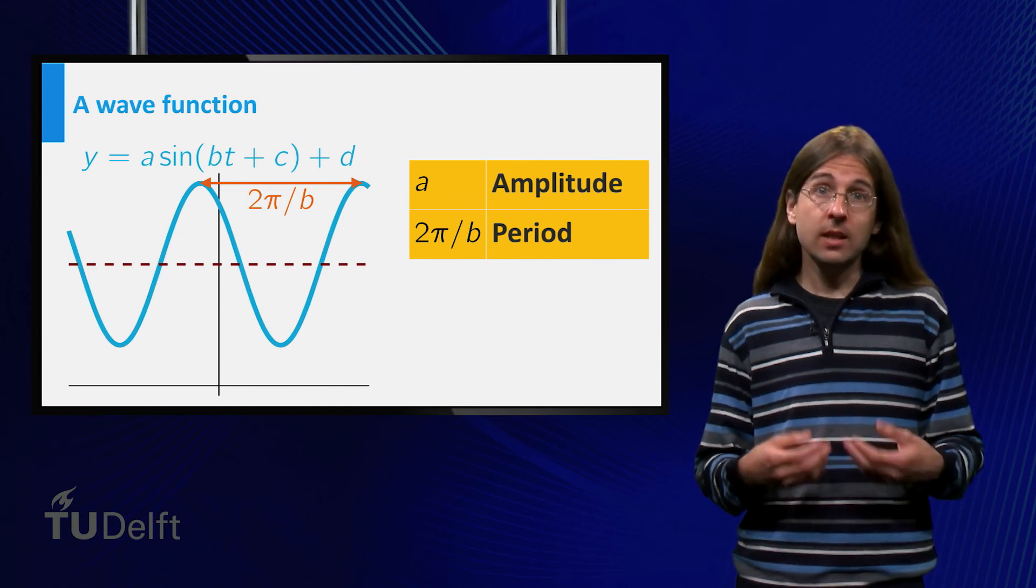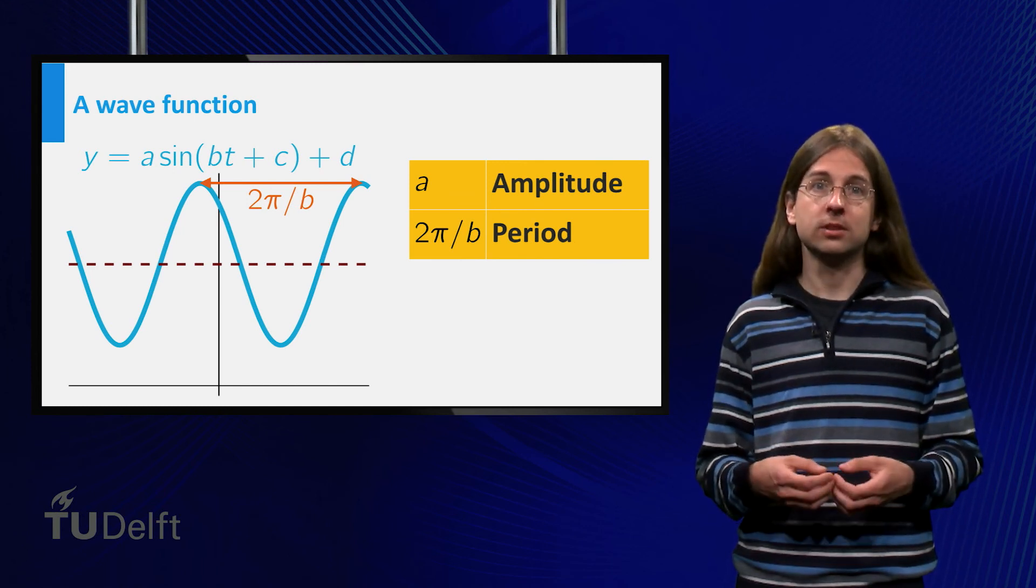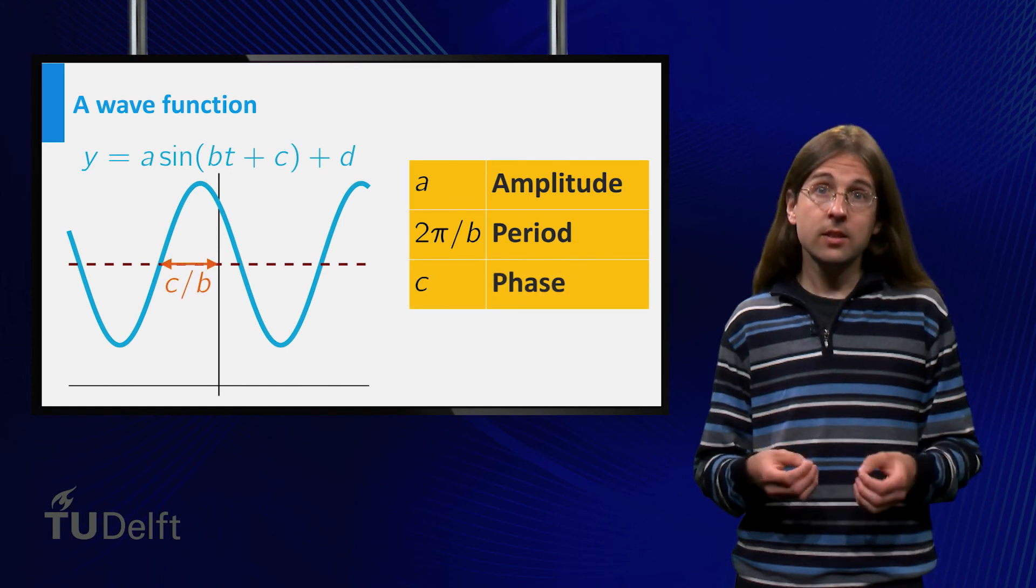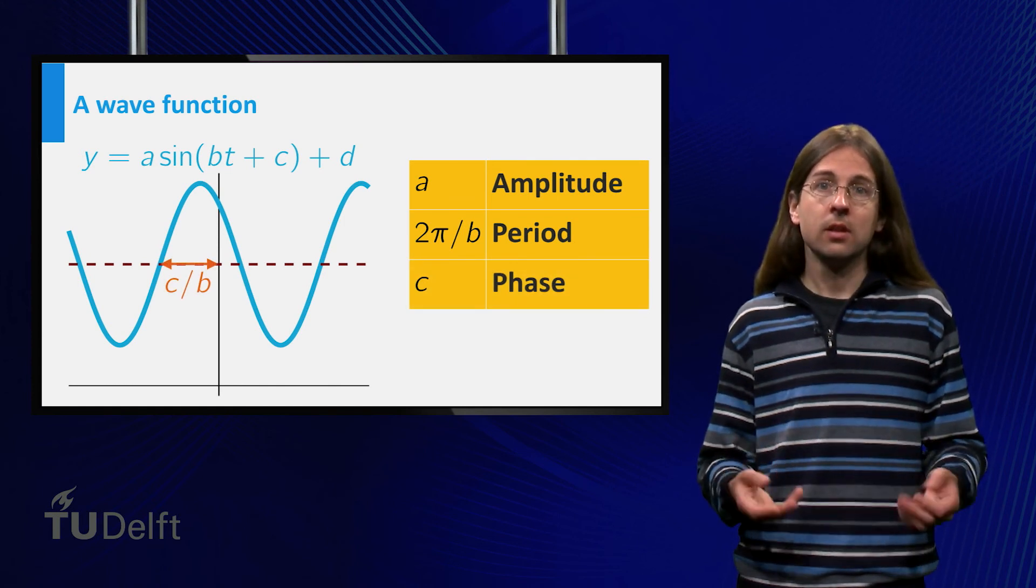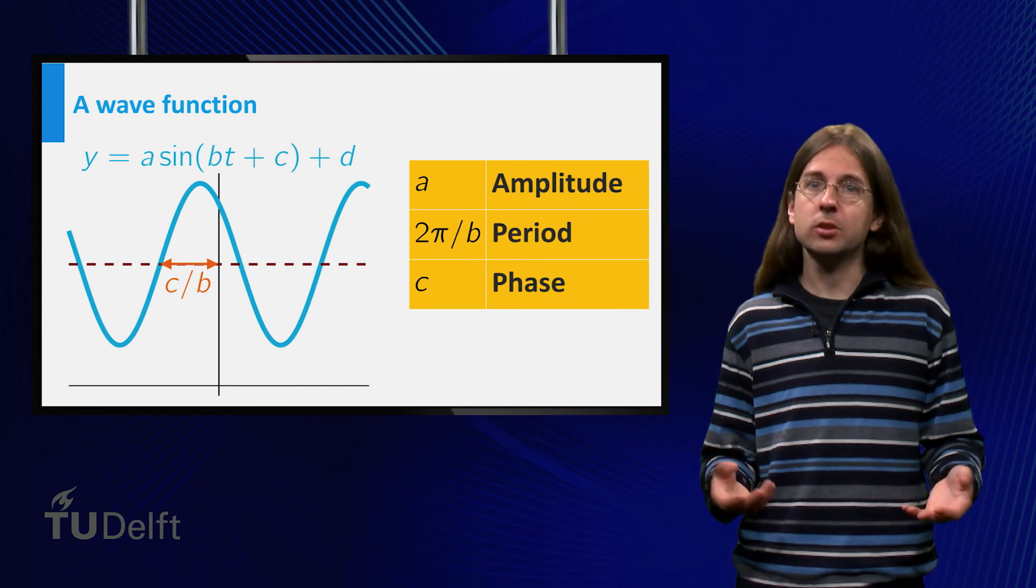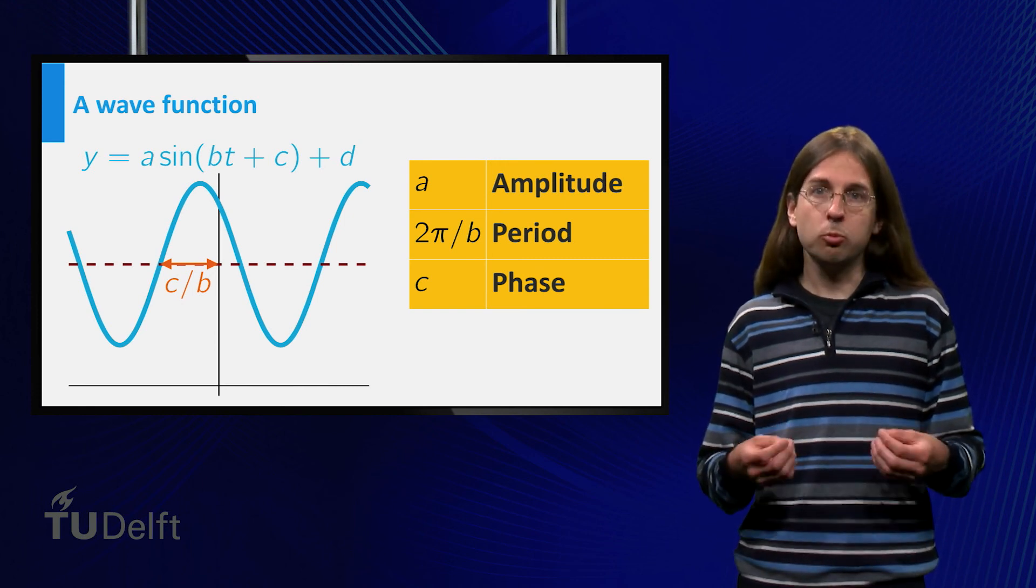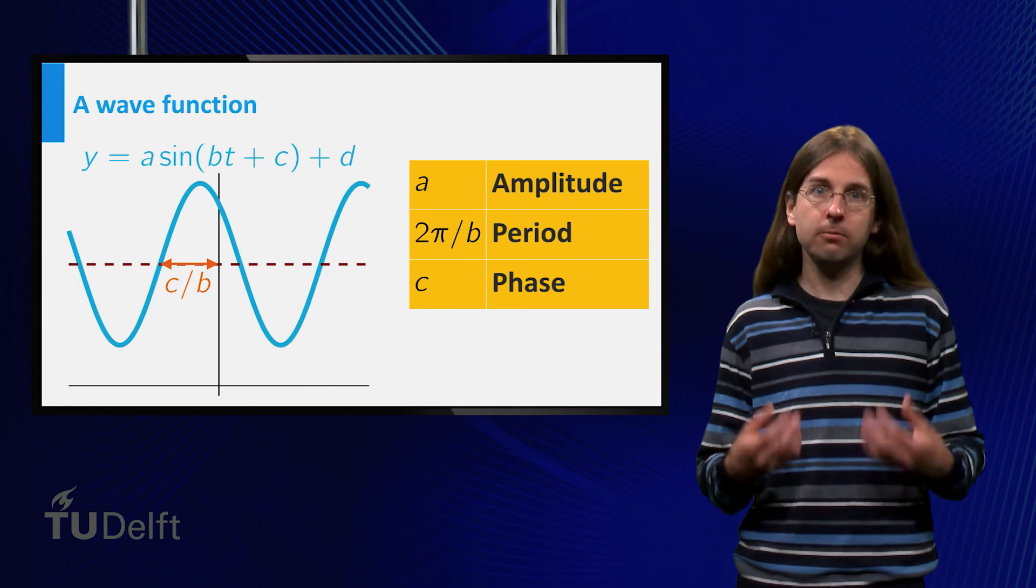The values of c and d correspond to translations. c is called the phase of the wave. The phase of a wave does not change what the wave looks like, but tells us at which time it passes through equilibrium.